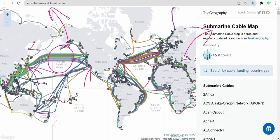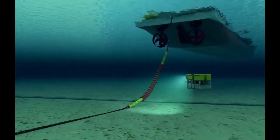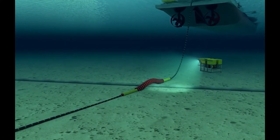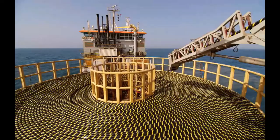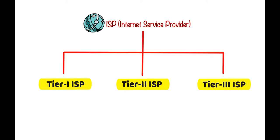Here is one example found on the internet showing how fiber optic cable is laid under the ocean. This is how all ISPs connect with each other. When it comes to fiber connectivity between ISPs, the ISP connectivity is divided into three categories: tier 1 ISP, tier 2 ISP, and tier 3 ISP.